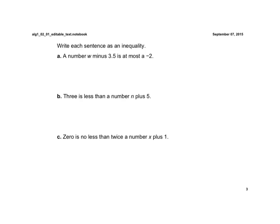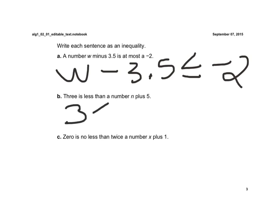So here it says, write each sentence as an inequality. So a number W minus 3.5 is at most, remember at most means less than or equal to, a negative 2. 3 is less than a number N plus 5. So 3 is less than a number N plus 5. And again, the main thing here is to notice that the word is is involved in both of these, which helps us know that we're having an inequality symbol.